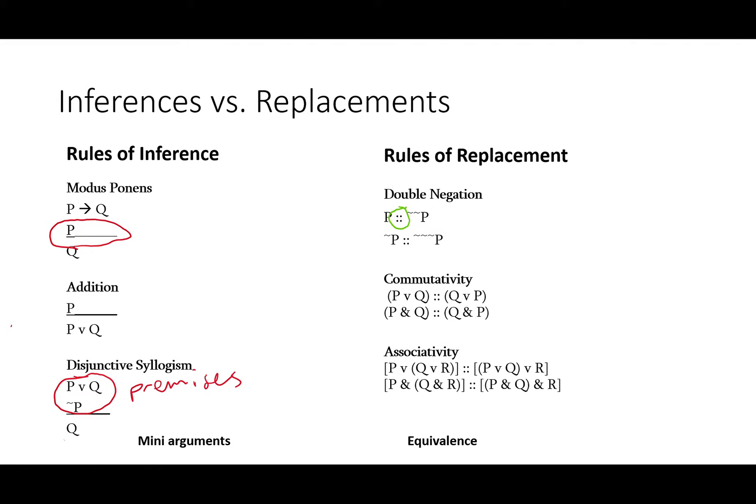Above the line in inference rules, you'll see things that function as premises and below it you'll find what functions as a conclusion. If either P or Q and not P, therefore Q.